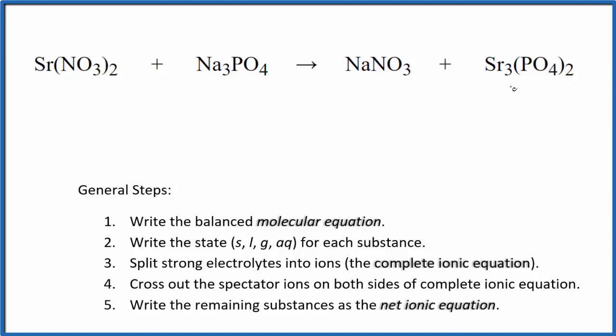I can see that I have three strontiums here and just one here. So I'm gonna put a three in front of the strontium nitrate. That balances the strontiums. So now I have two nitrates times three. That's six nitrates. So I'm gonna have to put a six in front of the sodium nitrate.